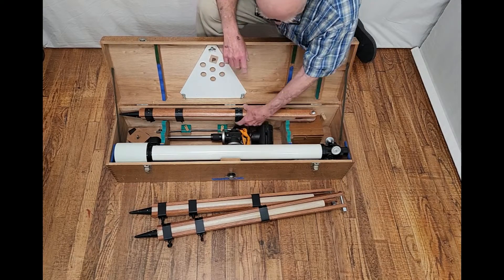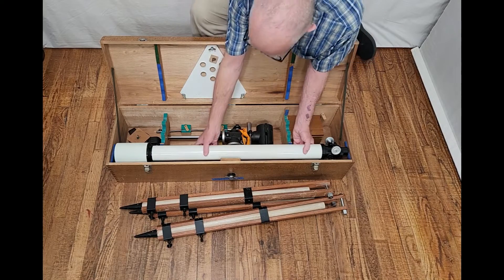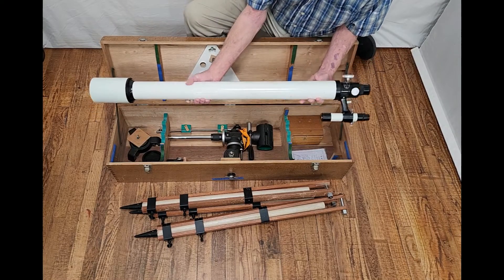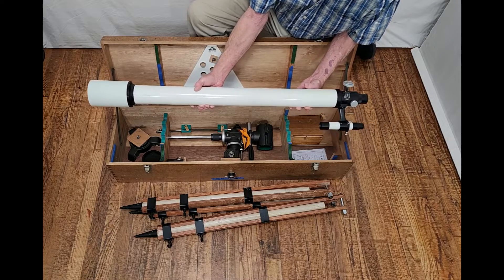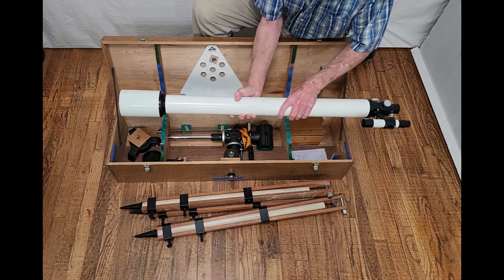The diameter of this tube is the same as the original TS-65 original version. The OTA is longer. Same little 5x25 finder.